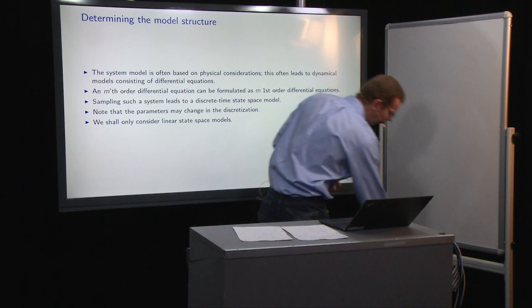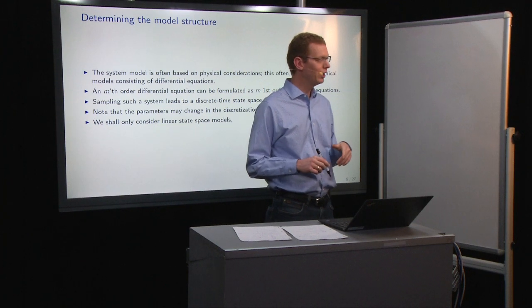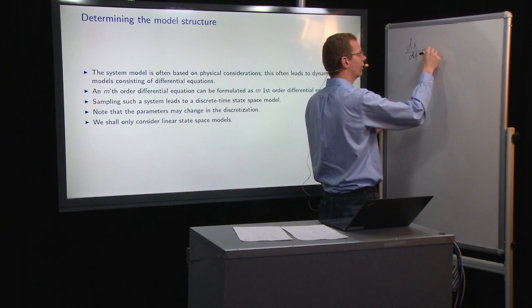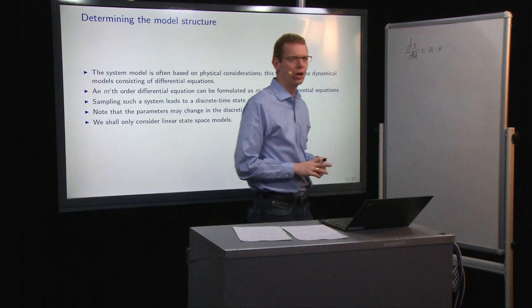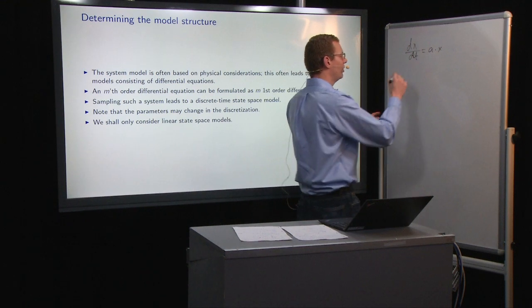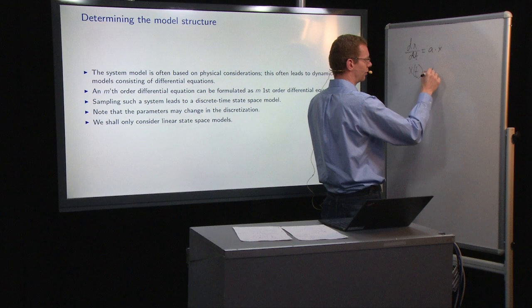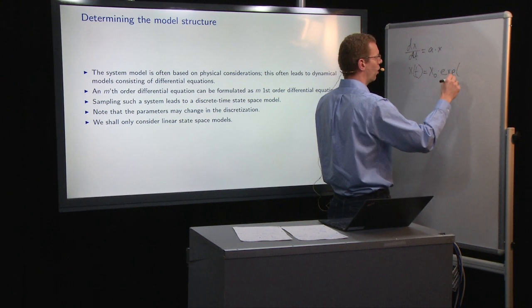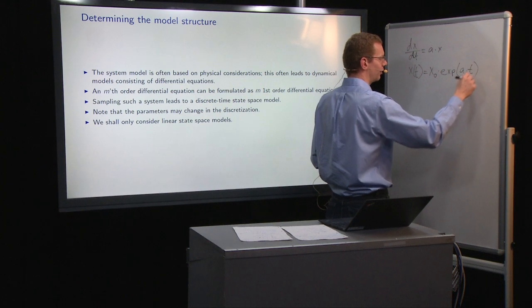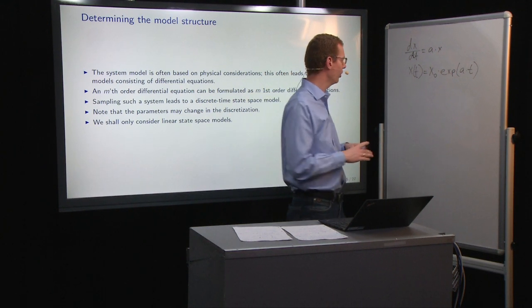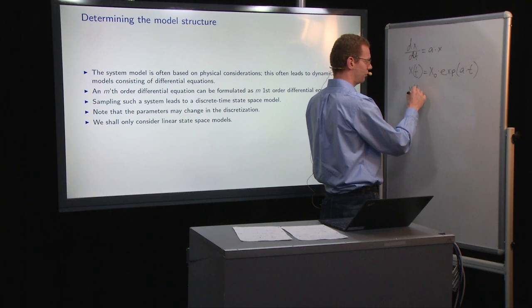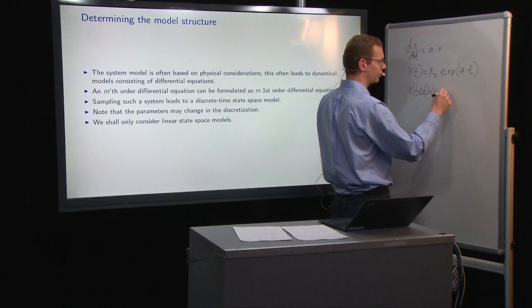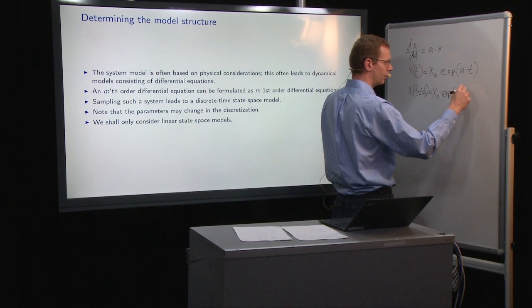But let's first just see how that happens for a simple differential equation. If we write dx/dt equals a times x, then I hope that you all know what the solution is to this equation, namely that x at time t equals some x_0 times the exponential of a times t. Now, if you want to do this in discrete time, what we're looking at, we could say that if we look at x at time t plus delta t, and we just plug that in, then we have x_0 times exponential of a times t plus delta t.